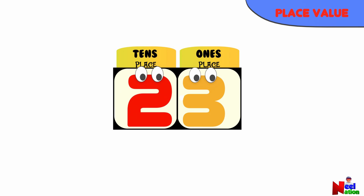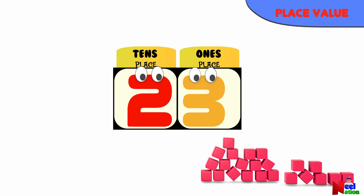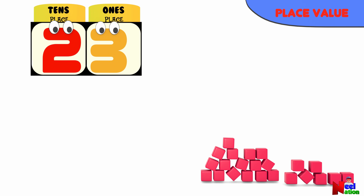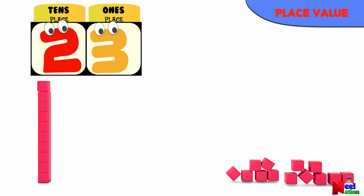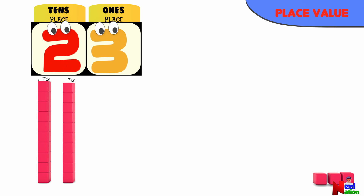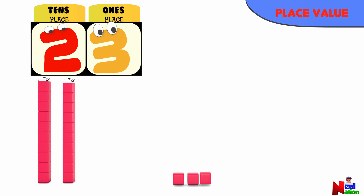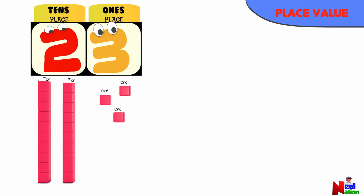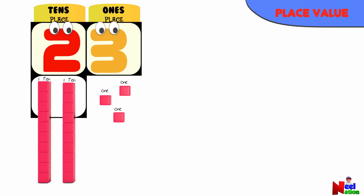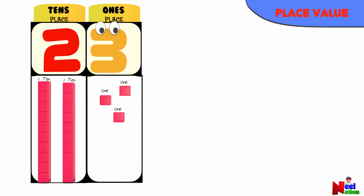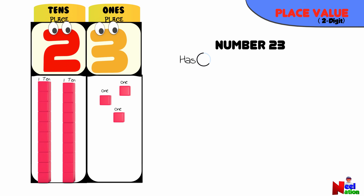Let's break it down using some cubes. Let's take 23 cubes and begin to stack them in groups that have 10 cubes. Each group of 10 cubes is called a ten. Let's count the rest of the cubes. When we don't have enough for a whole group of 10, we have individual cubes. We call these ones. So the number 23 has two tens and three ones.